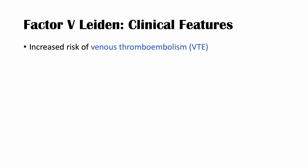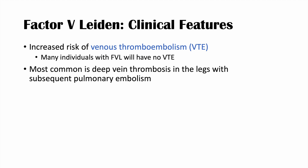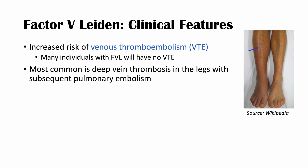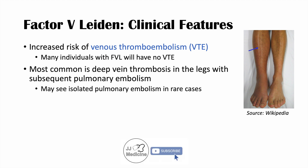The clinical features of Factor V Leiden include an increased risk of venous thromboembolism (VTE). The risk varies depending on whether the individual is a heterozygote or homozygote. Many individuals with Factor V Leiden will have no venous thromboembolism due to incomplete penetrance. The most common location for VTEs is the deep vein of the leg — deep vein thrombosis (DVT) with subsequent pulmonary embolism. You can see one leg being larger than the other in a DVT. Isolated pulmonary embolism can occur in rare cases.